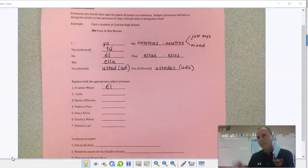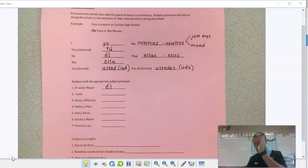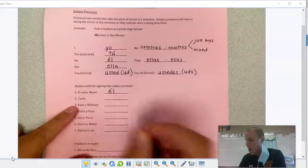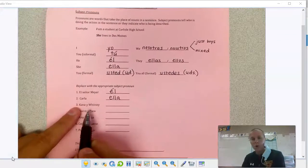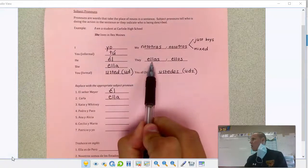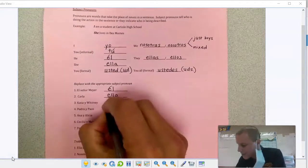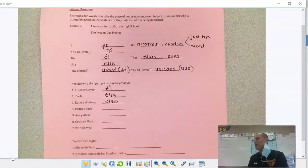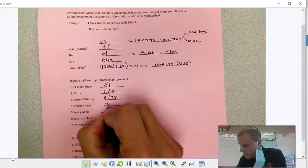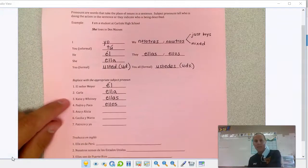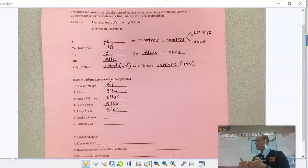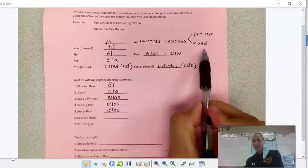Okay, welcome back. Carla is one chica here, I would just switch her and say ella. Katie and Whitney, two girls, instead of saying Katie and Whitney are going to the mall, I could say they are going to the mall, two chicas, so ellas. Same idea, Pedro and Paco are athletic, I could just say they are athletic, ellos. Ana and Alicia, just like Katie and Whitney, so I would say ellas again. Ana, Cecilia, and Mario, that's mixed, just boys or mixed, ellos.